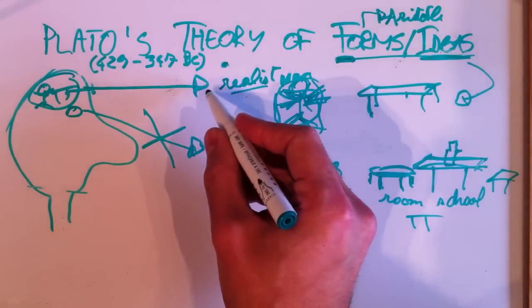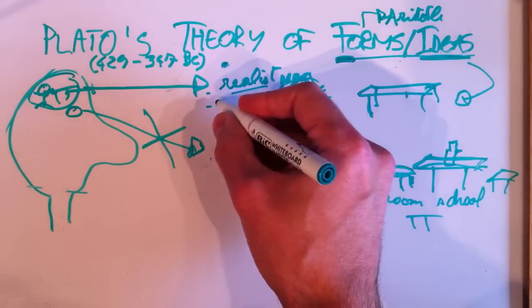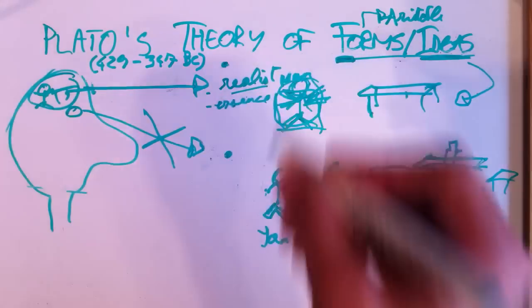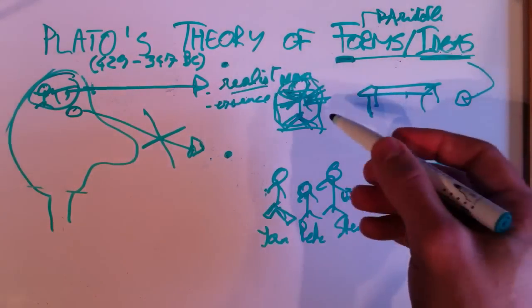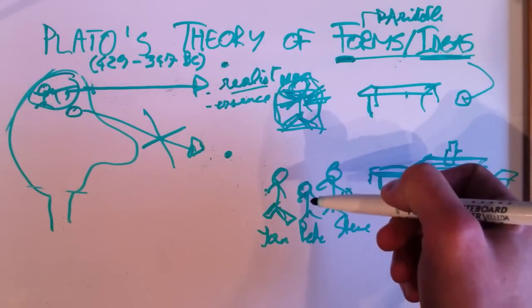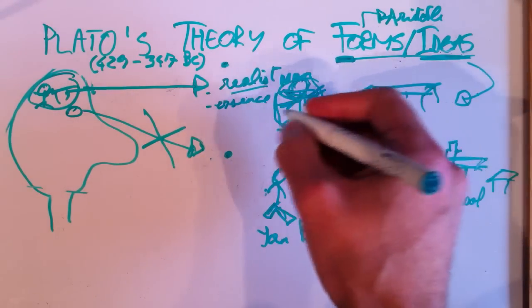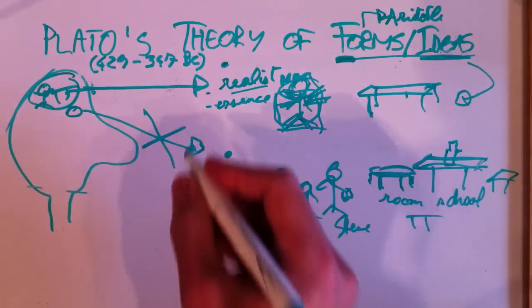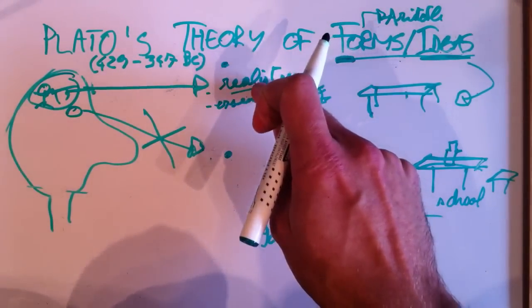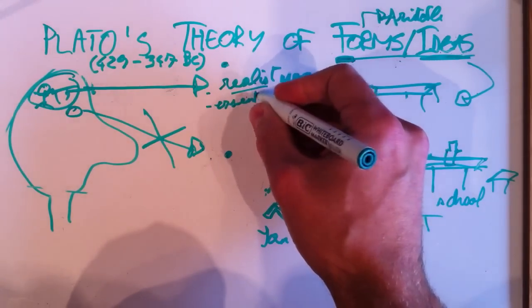Moreover, what are universals? For Plato, they are the essence of things. The essence. Man is the essence of what it means to be human. And therefore, we call Plato an essentialist. Essentialist. He is a realist and he is also an essentialist.